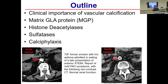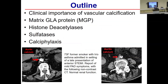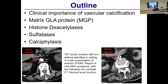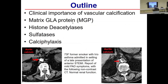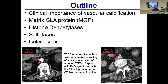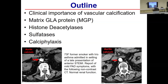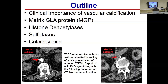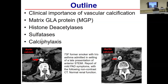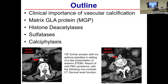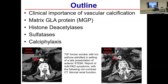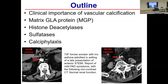This is just the outline of my talk — I'll keep it informal, and please feel free to ask questions. I'll talk about the clinical importance of vascular calcification from a patient perspective and highlight a few research stories my laboratory has been focusing on: an interesting protein called matrix GLA protein, the histone deacetylase pathway, and the sulfatases and their role in vascular calcification. I'll also introduce a clinical entity called calciflaxis, a form of accelerated vascular calcification, for which we hope to identify novel therapy.